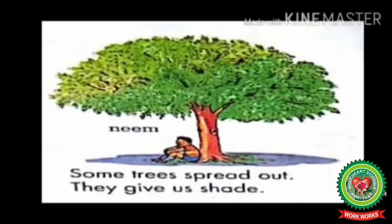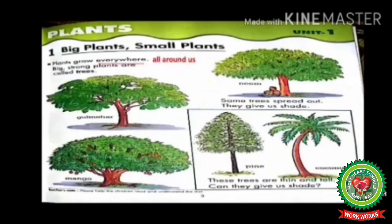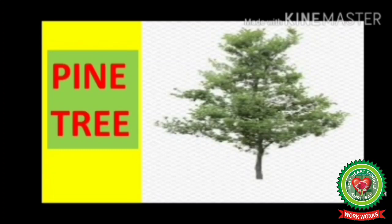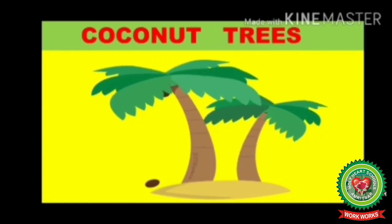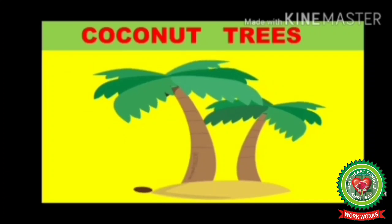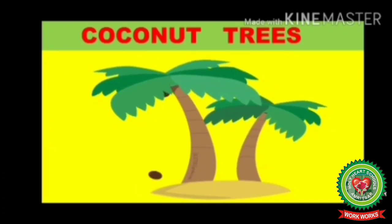Neem — some trees spread out, they give us shade. See children, this is a neem tree. It spreads a lot. We can sit under the shade of a tree and enjoy the shade in hot summer. Pine, coconut — these trees are thin and tall. Can they give us shade? This is a pine tree — it is tall and thin, so it cannot give us shade. This is a coconut tree — it is also tall and thin, so it cannot give us shade. Tall and thin plants are also called trees.